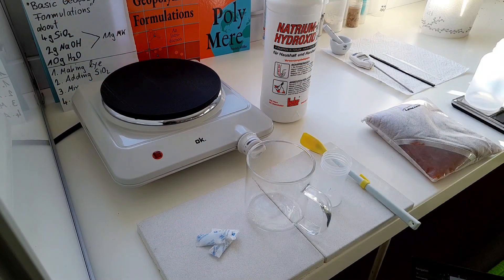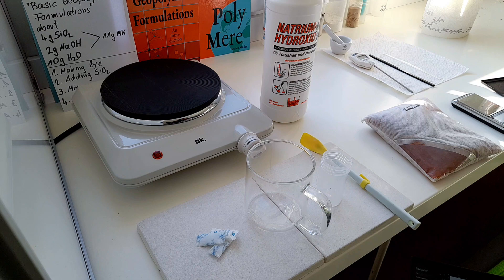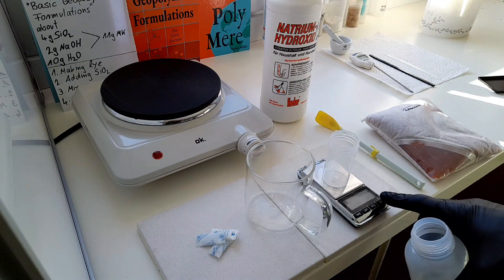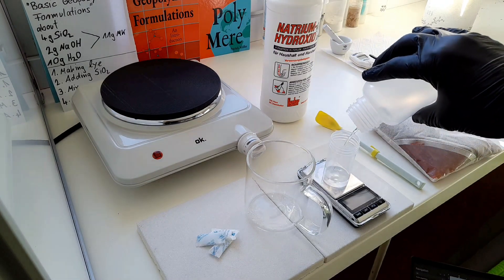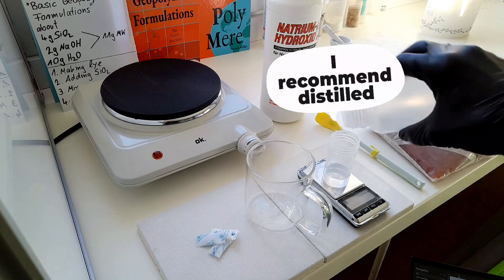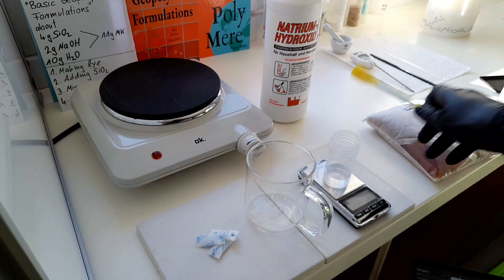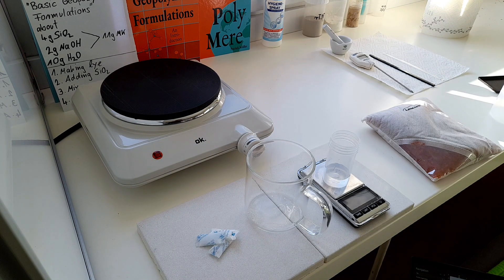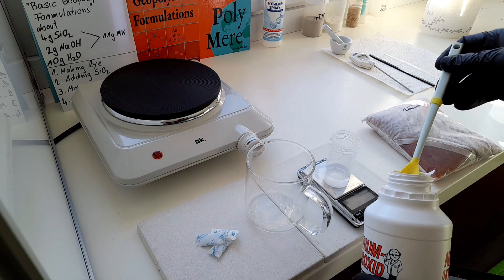Okay, first we make the lye solution, the sodium hydroxide solution, because it needs some time to rest. Next, we add 10 milliliters of water and then we add 2 grams of sodium hydroxide, which as you see is not much.